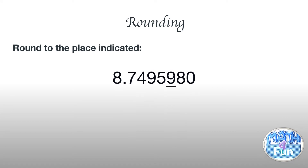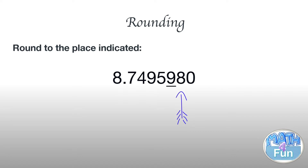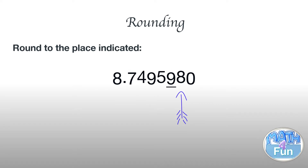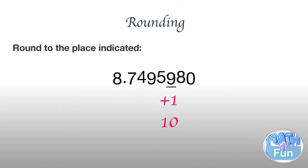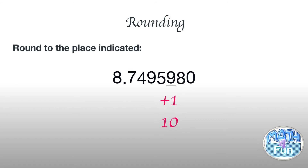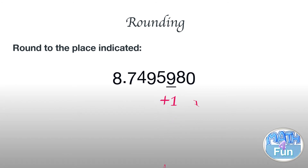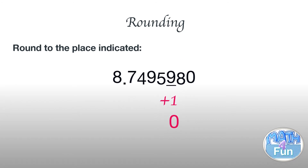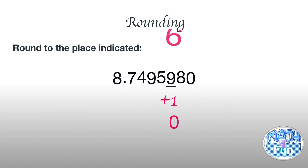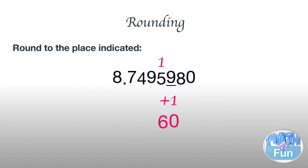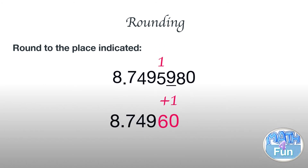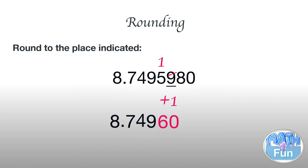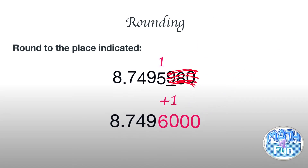Here we have 8.749598... The digit to the right of 9 is 8, which is more than 5, so we add 1 to the 9. Remember, 9 becomes 10 — you put 0 and carry 1 to the 5. So the number becomes 8.749600.